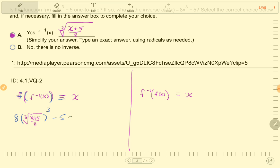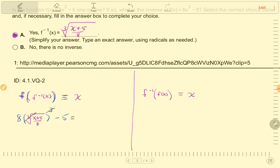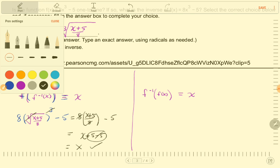Then the 8 cancels out, or actually, I have to cube first. So, the cubing actually cancels out the cube root inside the quantity, and then I have 8 times x plus 5 quantity over 8 minus 5. Then, these 8s cancel, and I have x plus 5 minus 5, so the 5s cancel out, and I do have x. So that's good. I also need it to happen like that in the opposite direction.